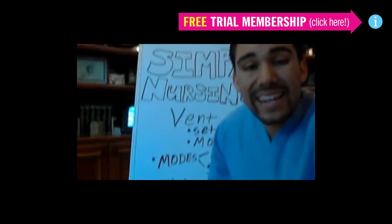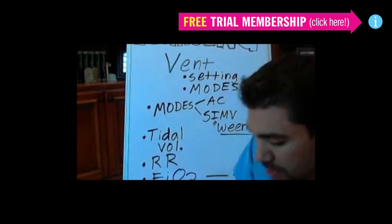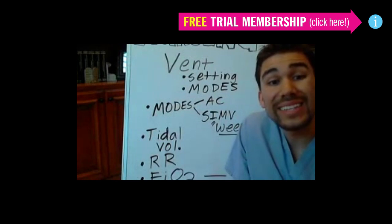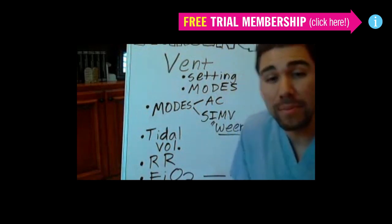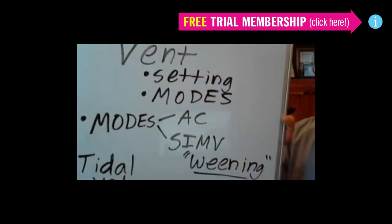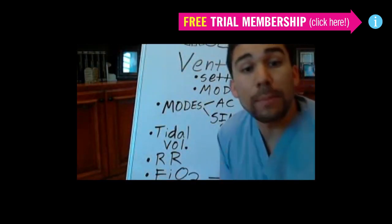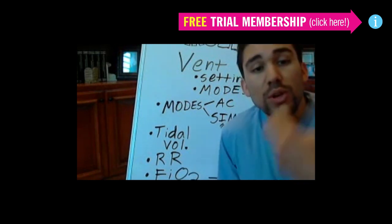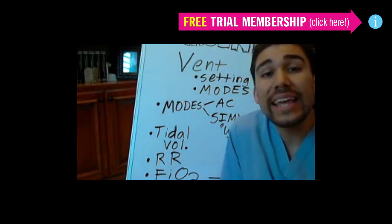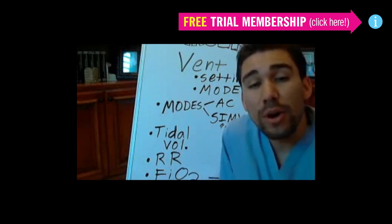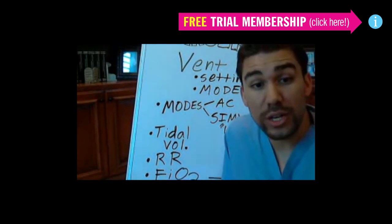So for your vent settings and vent modes, there are two major modes. You have an assist control mode, what's called AC mode. This AC mode is full-fledged breathing for your patient — making sure your patient is taking enough breaths. Your AC mode is pushing oxygen, pushing air down into those respiratory tracts.